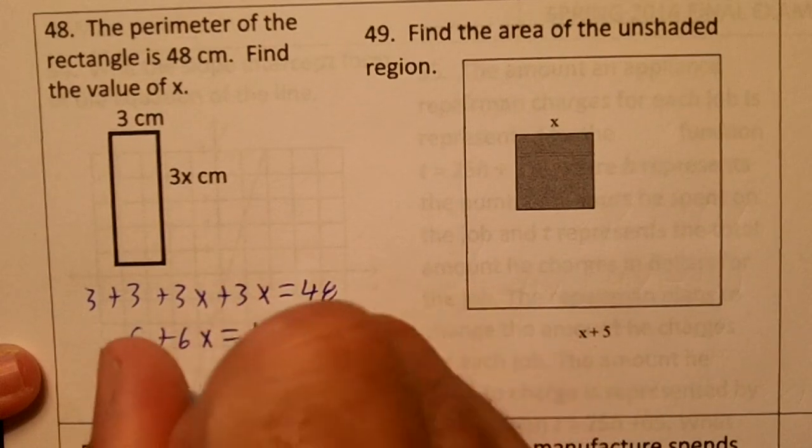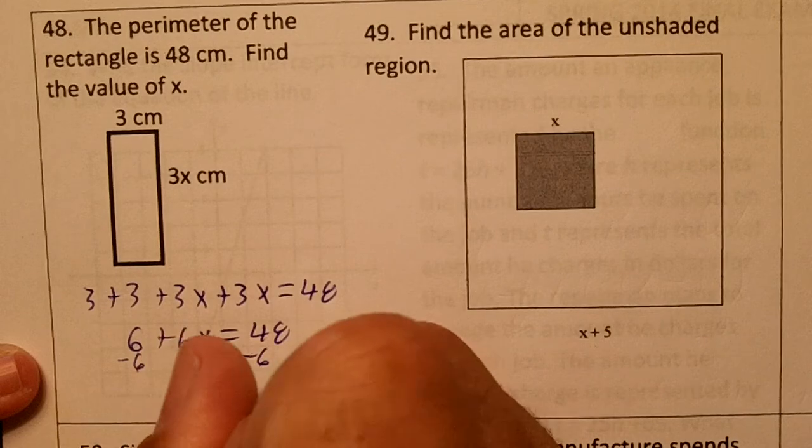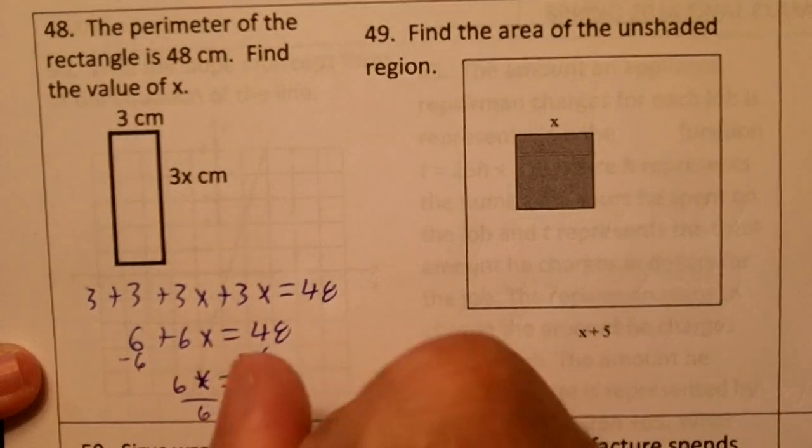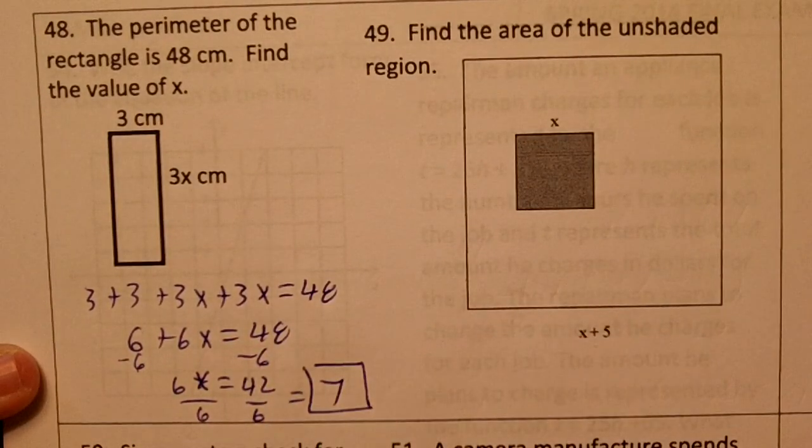Subtract the 6. 6x equals 42. Divide by 6 and you would get 7. So x would be 7 on this one.